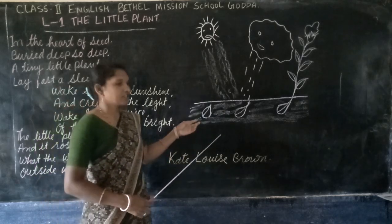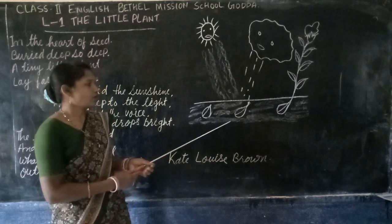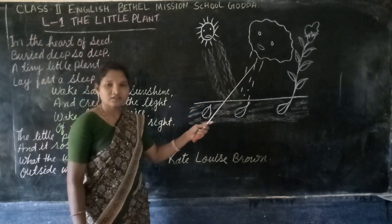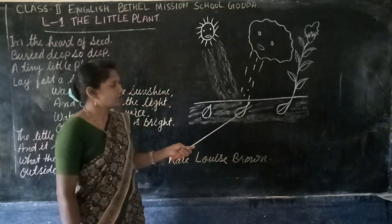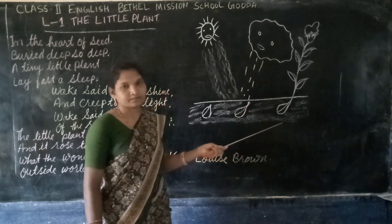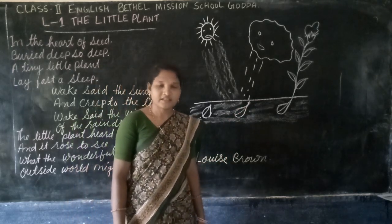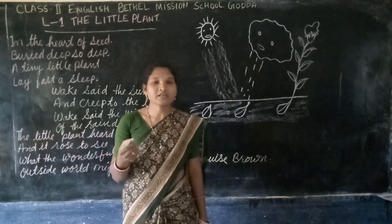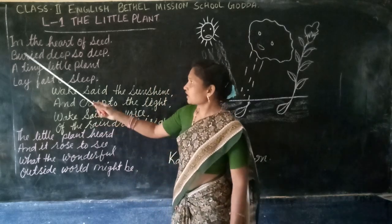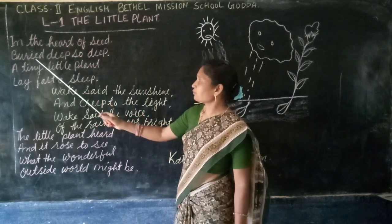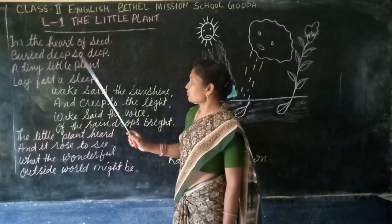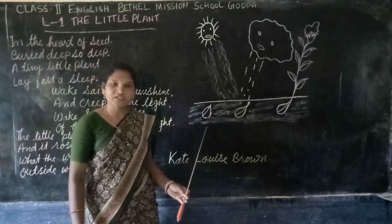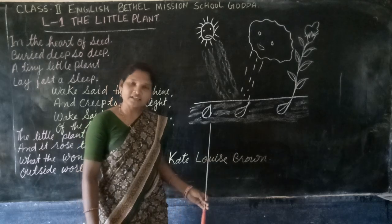Now we can see in this picture the small seed is put in the soil, and this seed slowly becomes germinated with the help of sun and water. And slowly, after germinating, it becomes a big plant. The poet says: 'In the heart of the seed, buried deep so deep, a tiny little plant lay fast asleep.' In the picture, we can see how a little seed is put into the soil and it is resting peacefully.